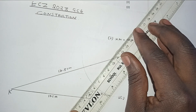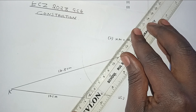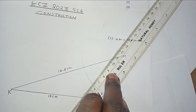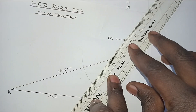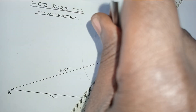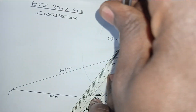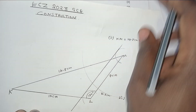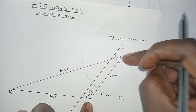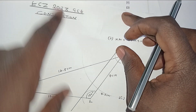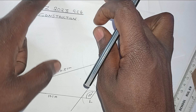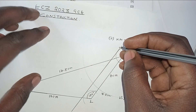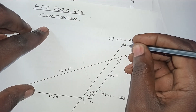On top of these arcs, draw a line that touches both arcs. This line is equidistant — 1 centimeter — from LM. That is the locus of points which are 1 centimeter from LM. Indicate this as the solution to part D2.